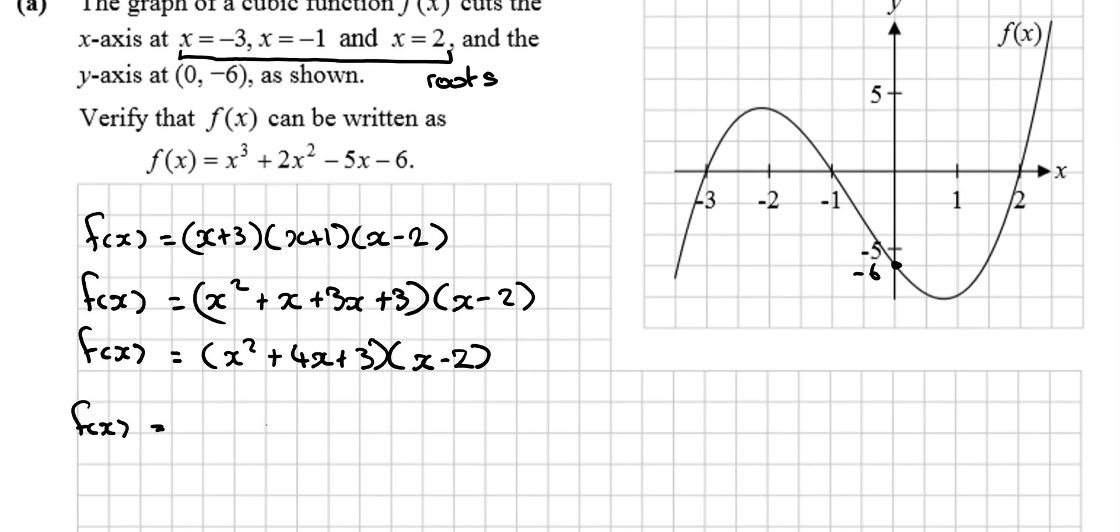f(x) is equal to, x squared by x is x cubed, x squared by minus 2, minus 2x squared. 4x by x is plus 4x squared, 4x by minus 2 is minus 8x. 3 by x is plus 3x, 3 by minus 2 is minus 6. f(x) is equal to x cubed, plus 2x squared, minus 5x, minus 6. And that is what we were asked to prove.